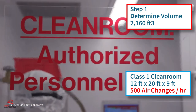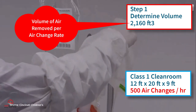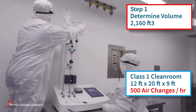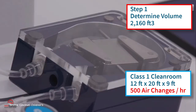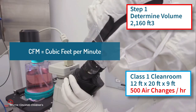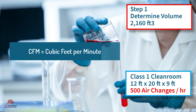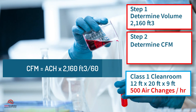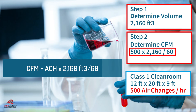This is the volume that needs to be removed from the space every hour, multiplied by the number of air changes required in an hour. This is in cubic feet per hour and we need to convert the units to minutes, as in cubic feet per minute or CFM. Step 2: determine required recirculation CFM. CFM equals 500 air changes times 2,160 cubic feet divided by 60 minutes, giving CFM equals 18,000.